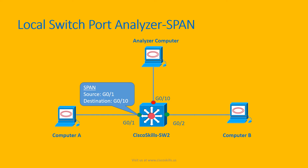For the opposite direction, we need to define another SPAN session with the source port G0/2, which connects to computer B, and copy it to the destination port G0/10. By doing that, the analyzer computer will receive all packets sent between computer A and computer B.